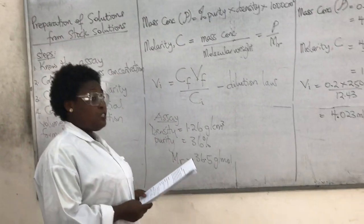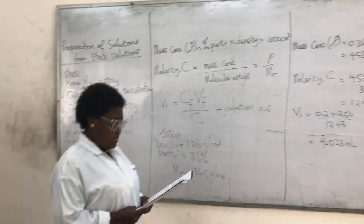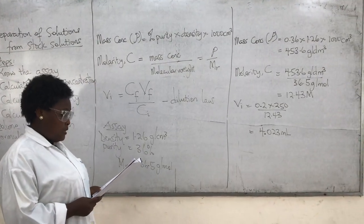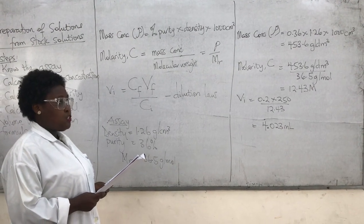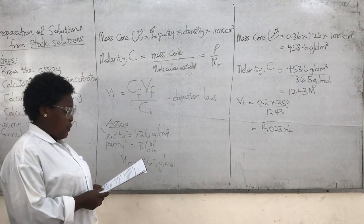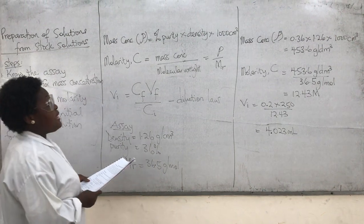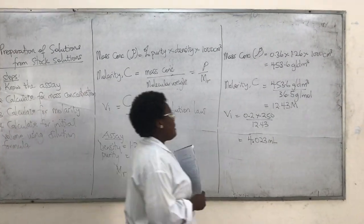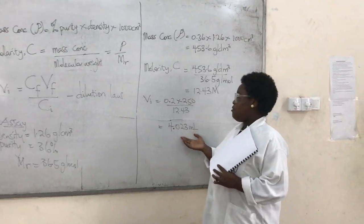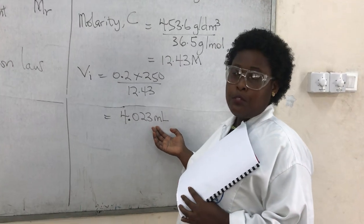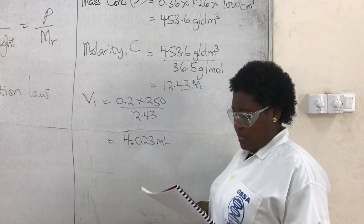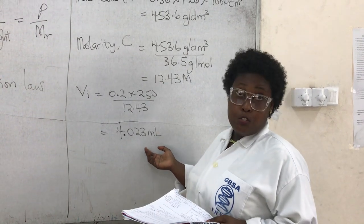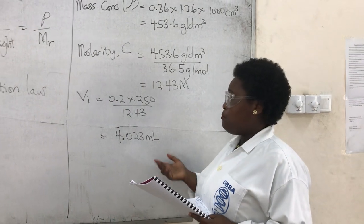From the question: the final concentration is 0.2 molar, the final volume is 250 mL, and the initial concentration is the molarity we calculated — 12.43 molar. Substituting into CᵢVᵢ = CfVf and solving for Vᵢ, the answer is approximately 4.023 mL. This means we need about 4 mL of the stock solution to prepare the 0.2 molar solution.